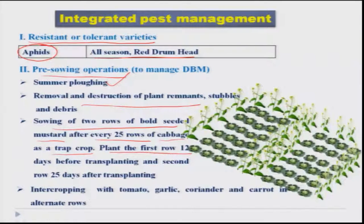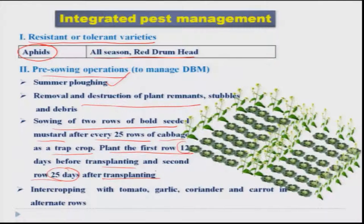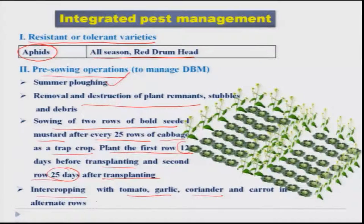The first row of mustard should be sown 12 days before transplanting, and the second row at 25 days after transplanting. This is very essential as it actually diverts the diamondback moth population away from cabbage. We can also go for intercropping with tomato, garlic, coriander, etc., in order to harbor more natural enemies.